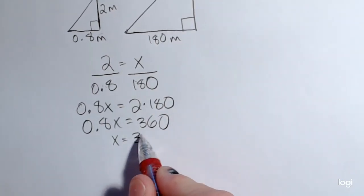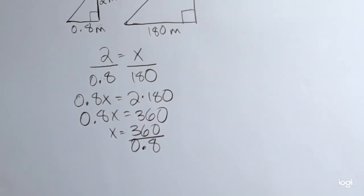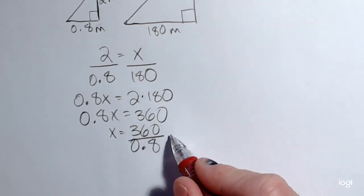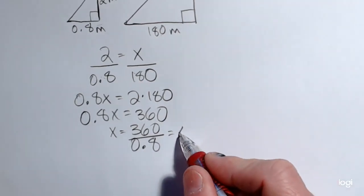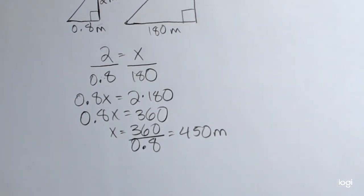And then the last step is to divide both sides by 0.8. So I'll have 360 divided by 0.8. And doing that division in my calculator, I got 450 and the units is meters.